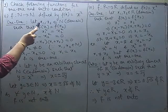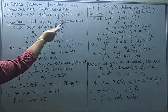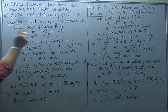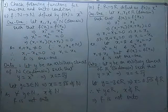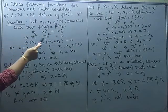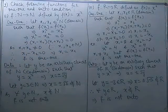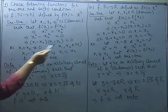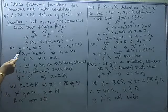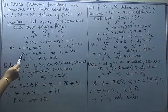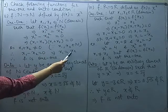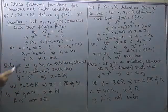We will check whether it is 1-1 and onto. For 1-1, take two natural numbers x₁ and x₂ in the domain such that their images are equal: f(x₁) = f(x₂), meaning x₁² = x₂². Simplifying, x₁² − x₂² = 0, which factors as (x₁ − x₂)(x₁ + x₂) = 0. Since x₁ and x₂ are natural numbers, their sum cannot be 0, so x₁ − x₂ = 0, meaning x₁ = x₂. Therefore the function is 1-1.